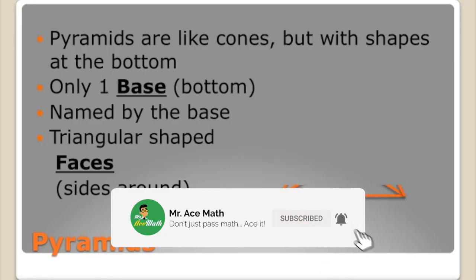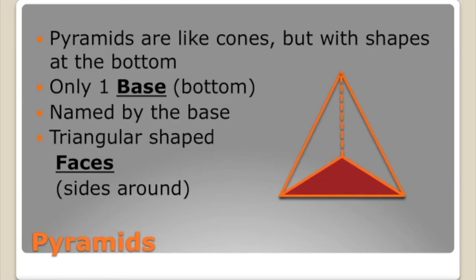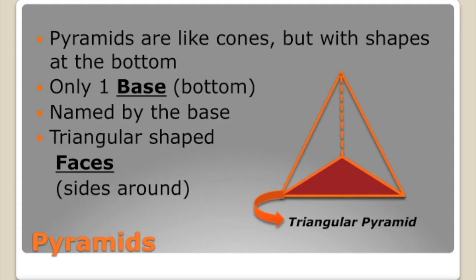Here we have a triangular-shaped base, so we would call this a triangular pyramid. How many faces does it have? The same way we determine the number of faces for a prism is the same way we do it for a pyramid — the only difference is that pyramids have triangular-shaped faces instead of rectangular ones. Since the base has three sides, we're going to have three triangular-shaped faces — one here, one here, and then the big front triangle.